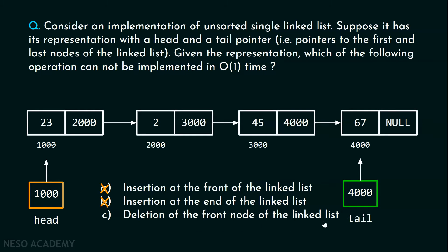Deletion of the front node of the linked list will also take constant time. Here, we need to delete the first node. We put a temp pointer pointing to the first node, then move the head pointer so it points to the second node of the list. Finally, using the temp pointer, we can easily delete the first node. This obviously takes O(1) time.